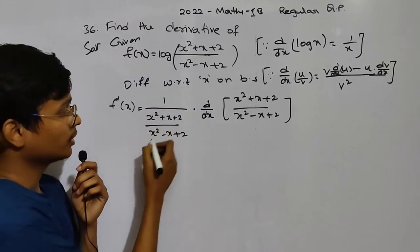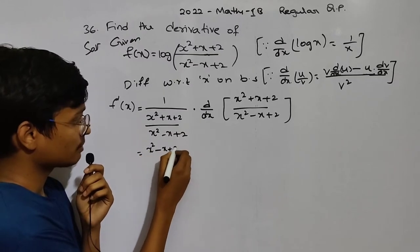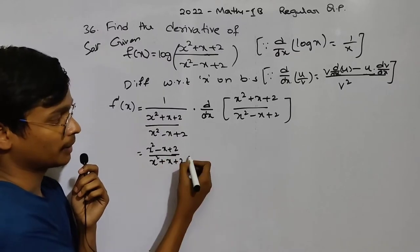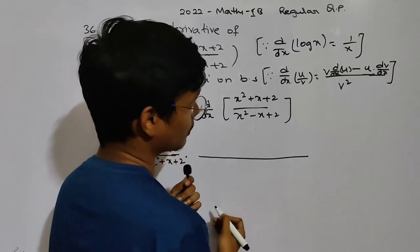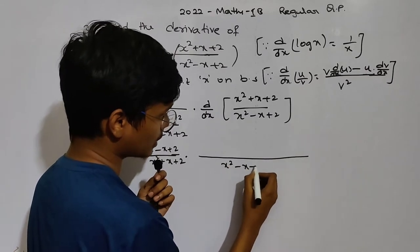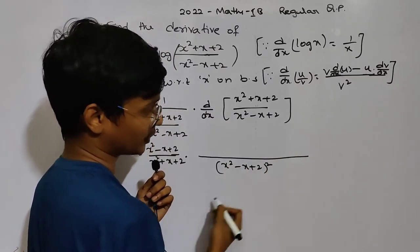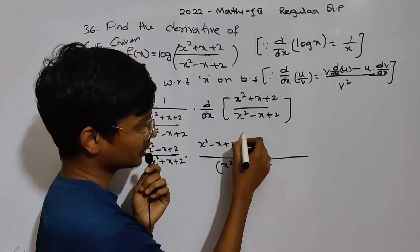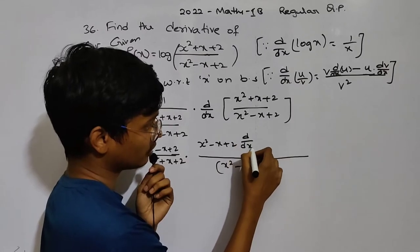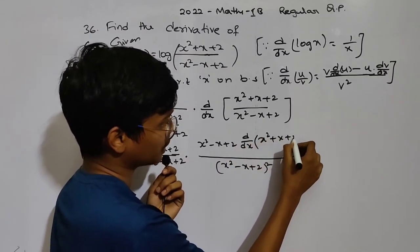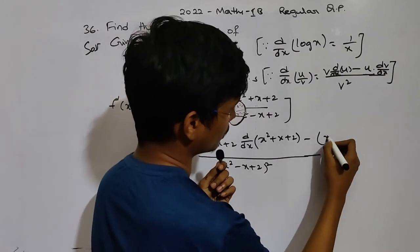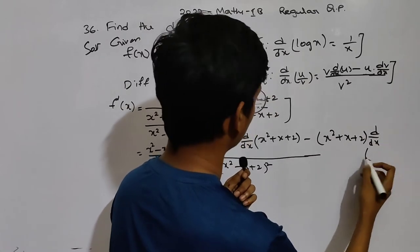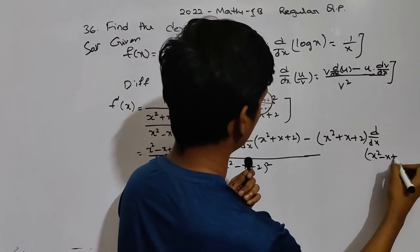So, we apply the quotient rule. This gives us: (x squared minus x plus 2) times d by dx of u, which is (x squared plus x plus 2), minus u times d by dx of v, which is (x squared minus x plus 2), all over v squared, that is (x squared minus x plus 2) whole square.